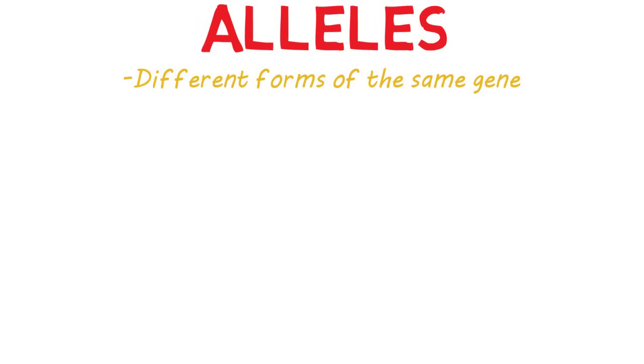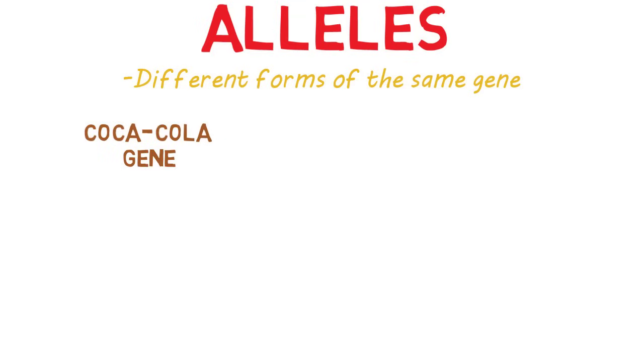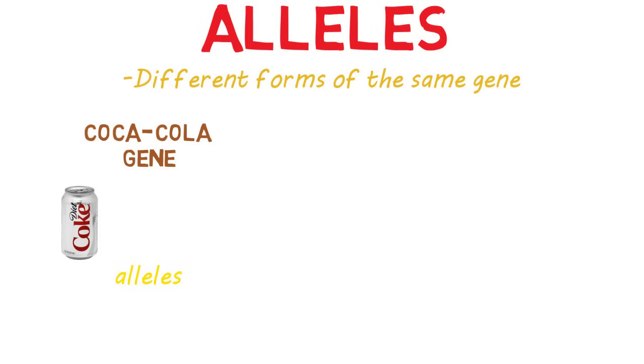Let's use an analogy. If Coca-Cola were the gene, the alleles would be diet, classic, caffeine-free, vanilla, cherry, or whatever kind of Coke it is.